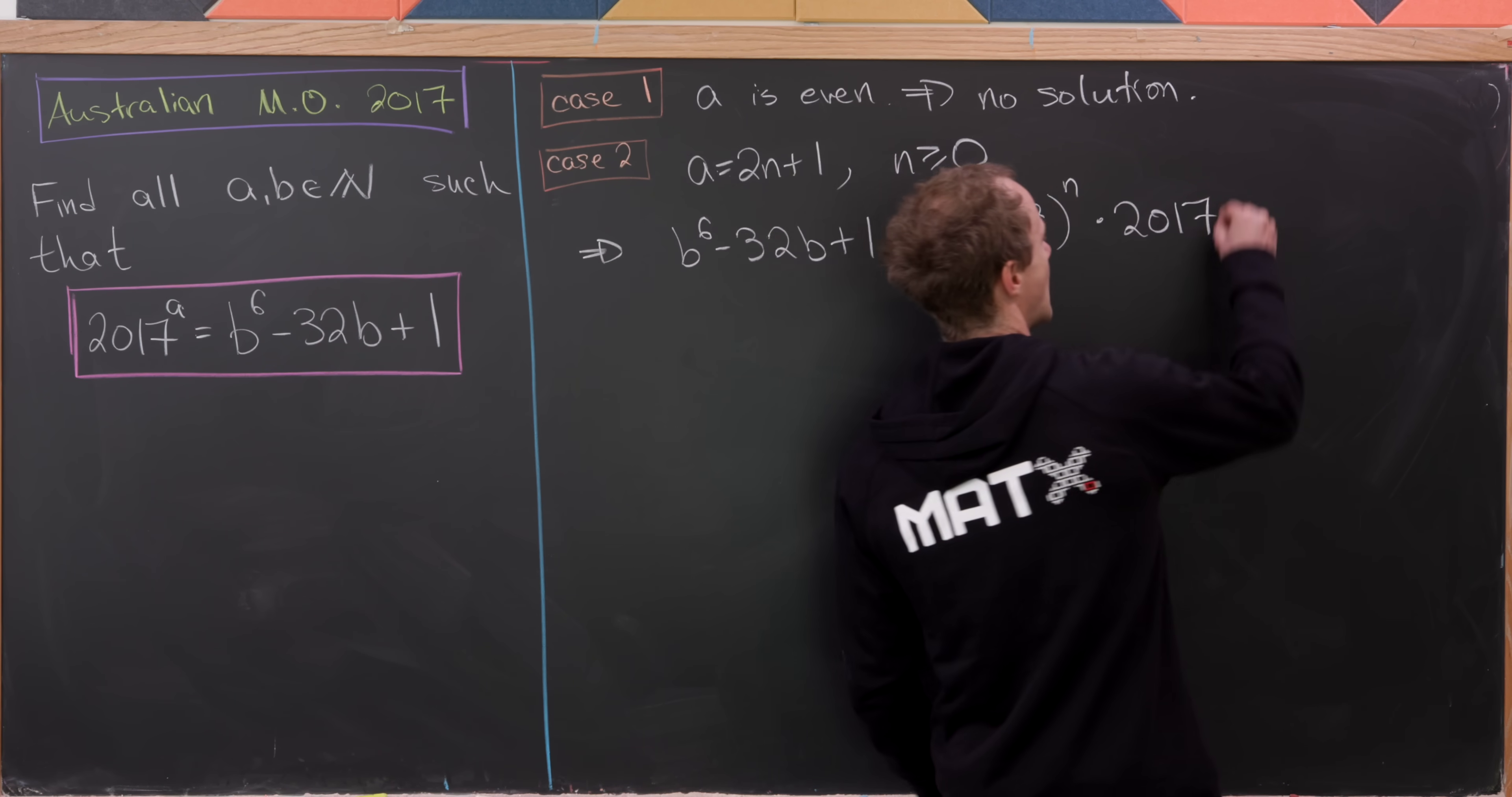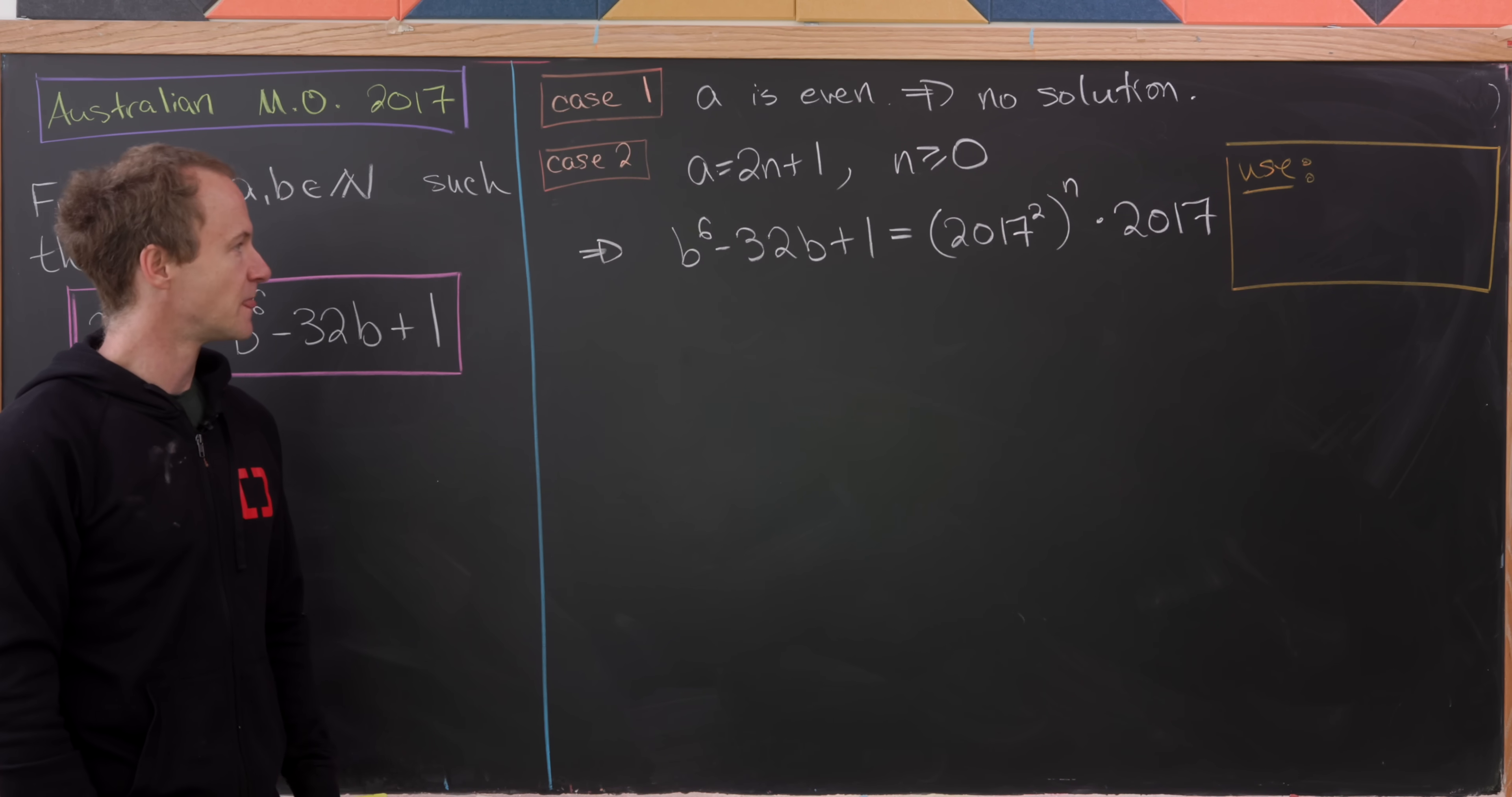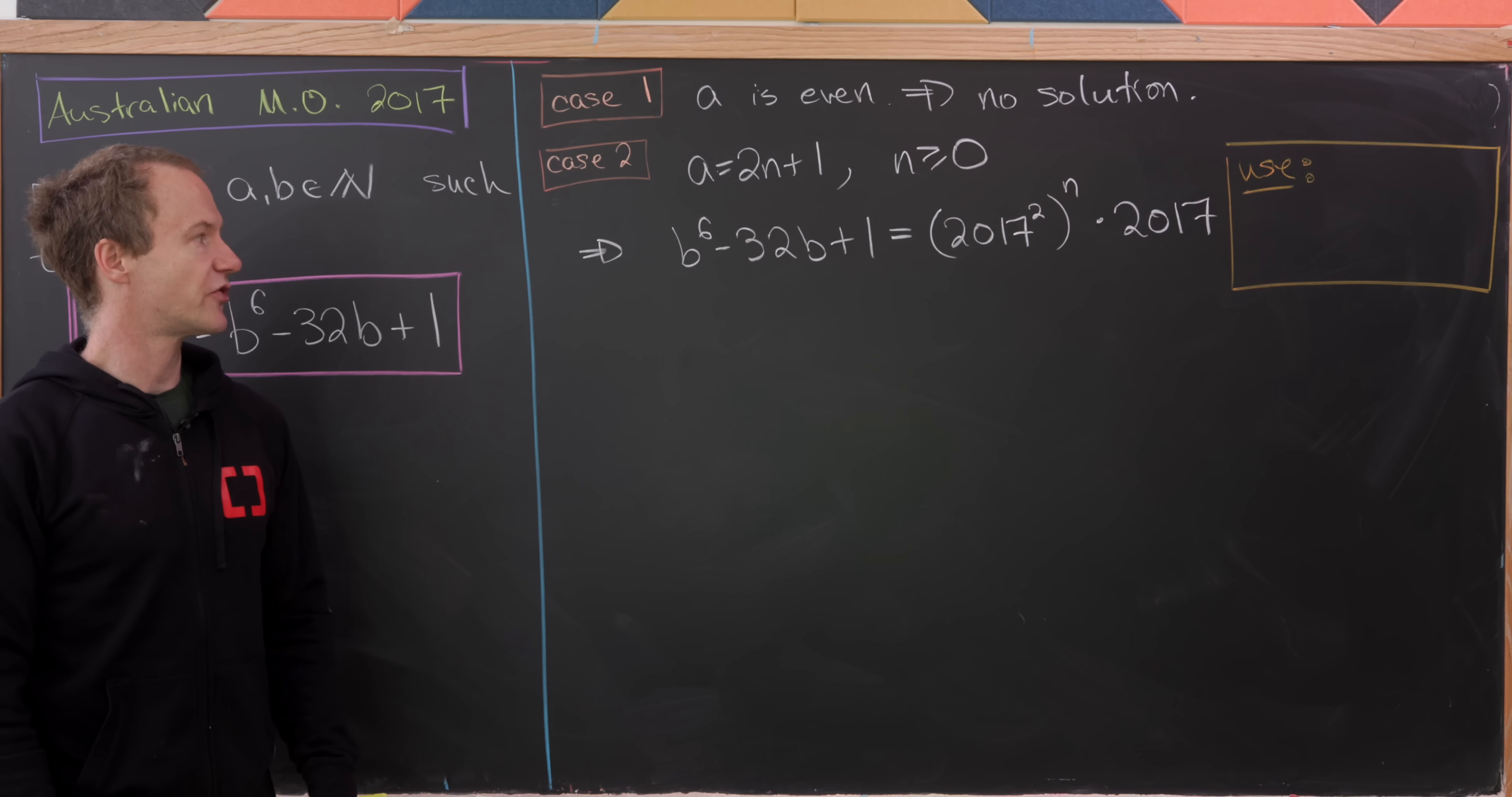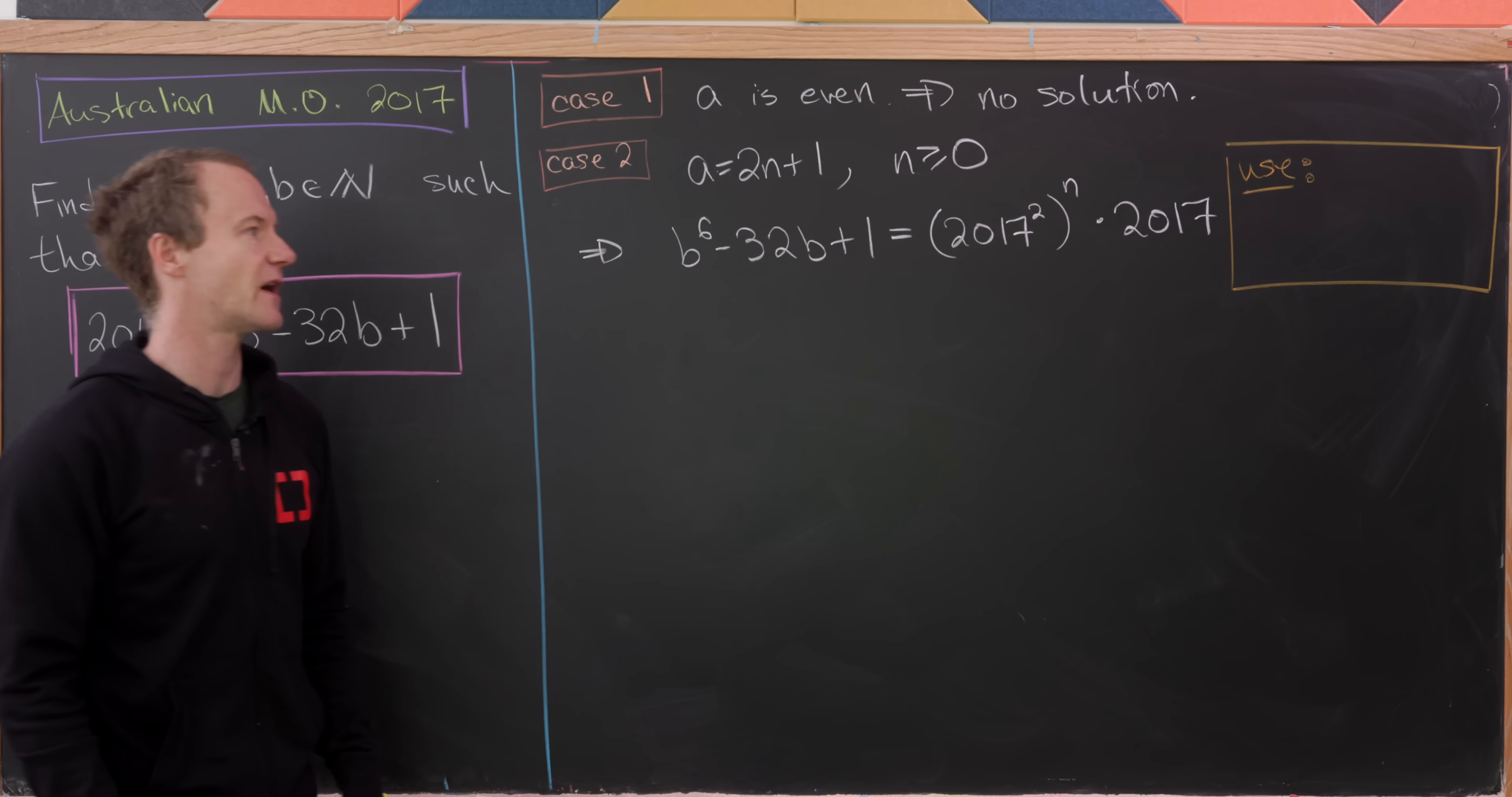So how do we pick the modulus? Well, let's look at what we've got here and see what would simplify the situation the most. So we've got a B^6, we've got a 32B, we've got a 2017. Notice if we were to work mod 5, 2017 is 2, 32 is 2. And then we can use Fermat's little theorem to write B^6 as B^2. And then I think stuff will simplify quite a bit.